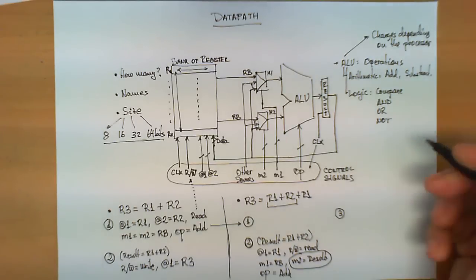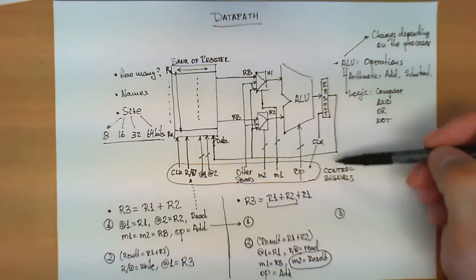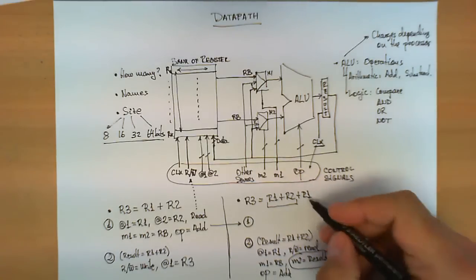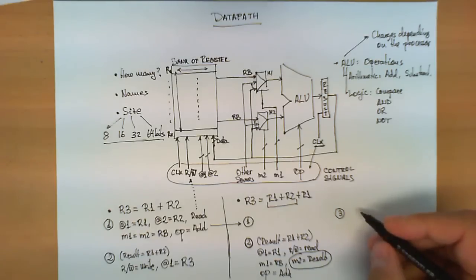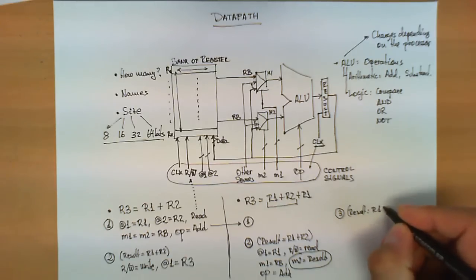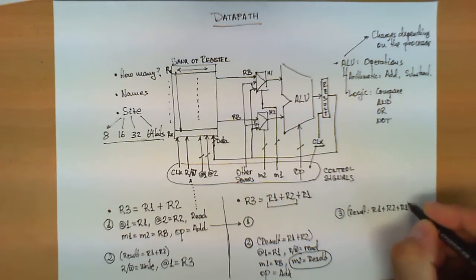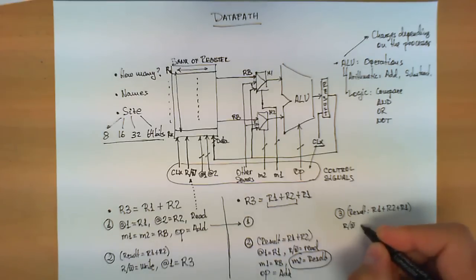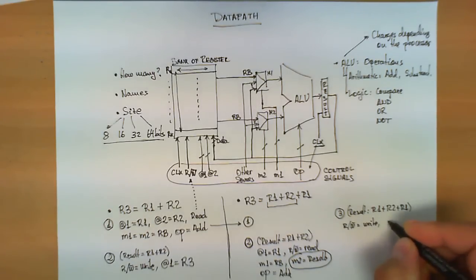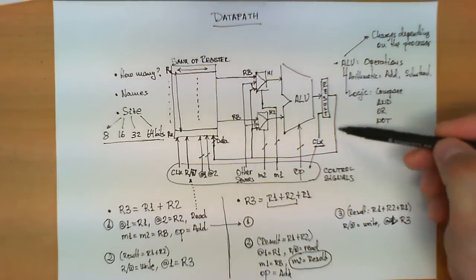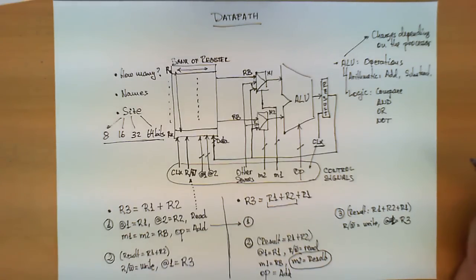On step number 3, when the clock ticks again, that addition — which is R1 plus R2 plus R1 — is captured in the result register. Therefore, result now contains R1 plus R2 plus R1. What we have to guarantee is that this result is written back: we set the read-write signal to write and address 1 to R3. At the following clock cycle, this value is stored in the proper register in the bank of registers.